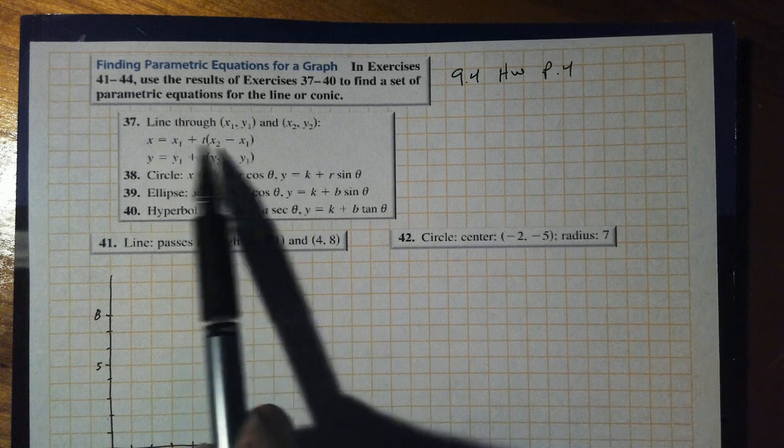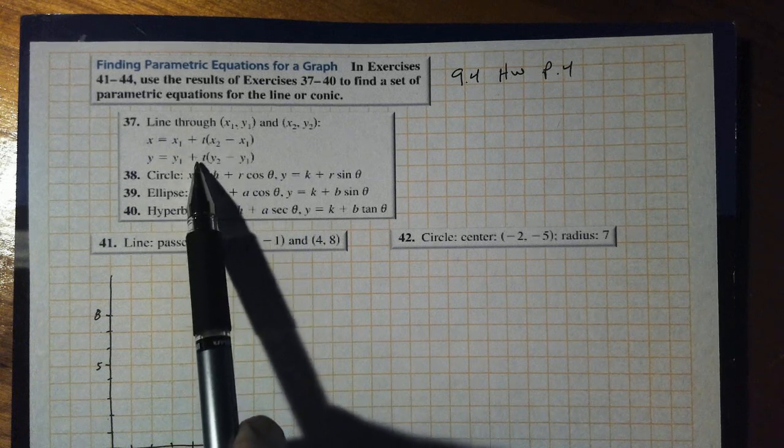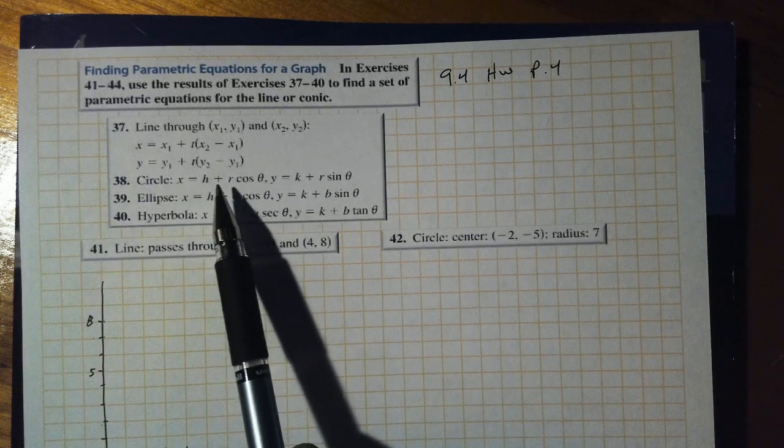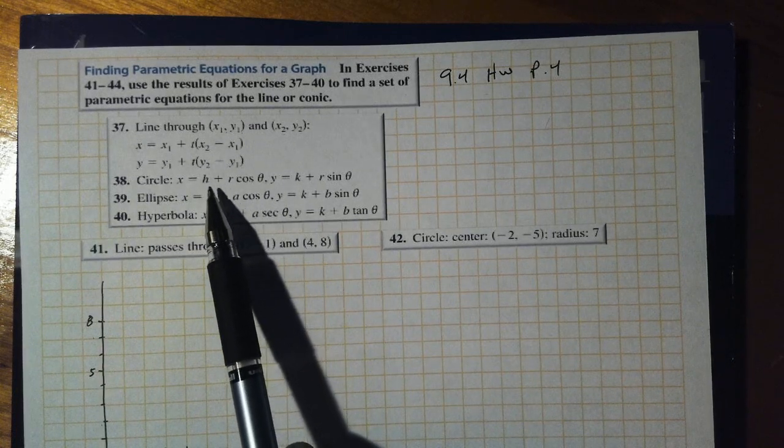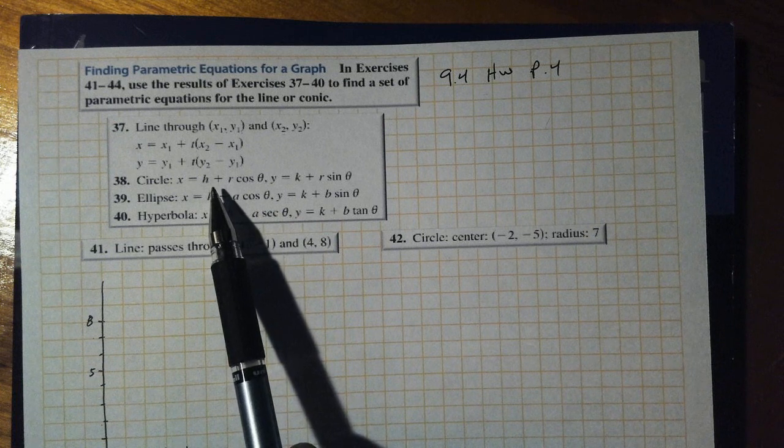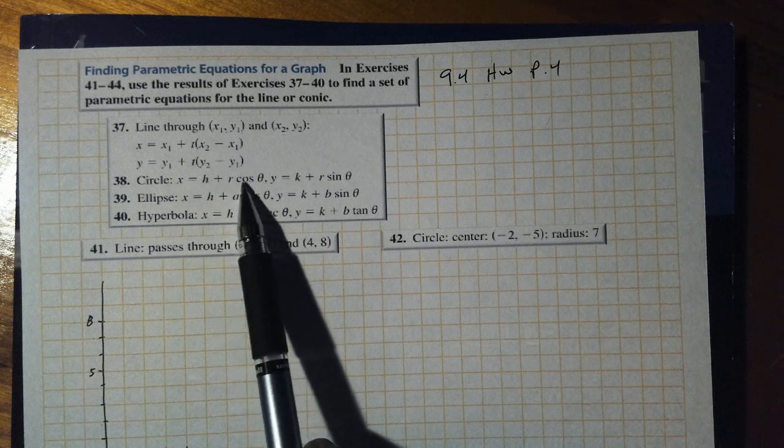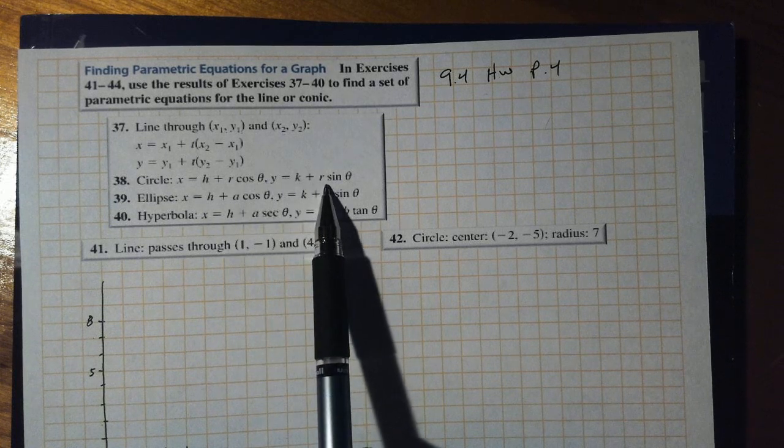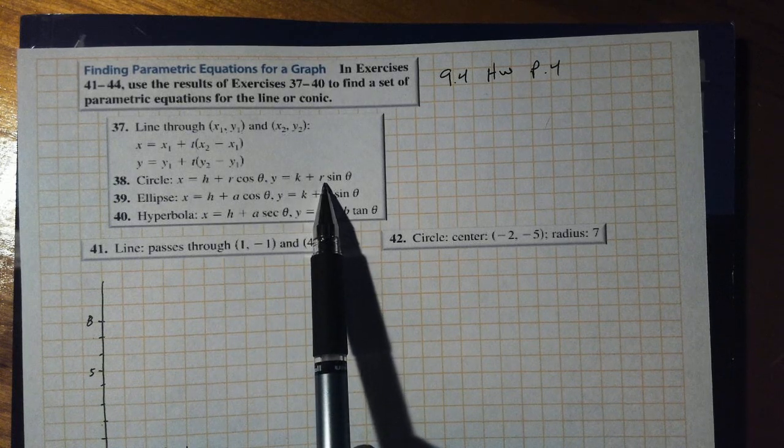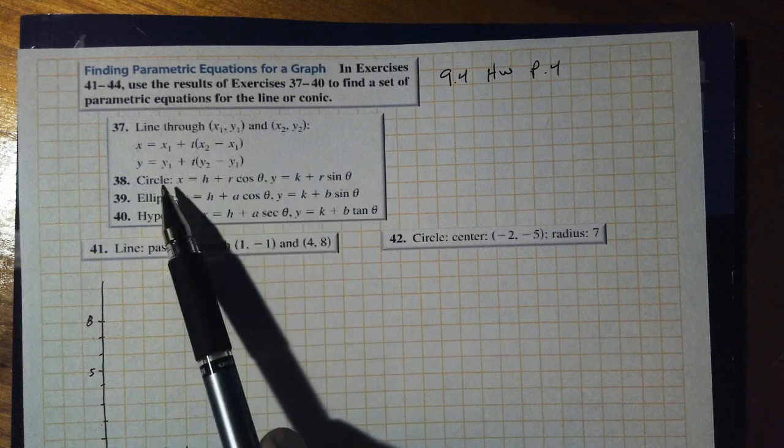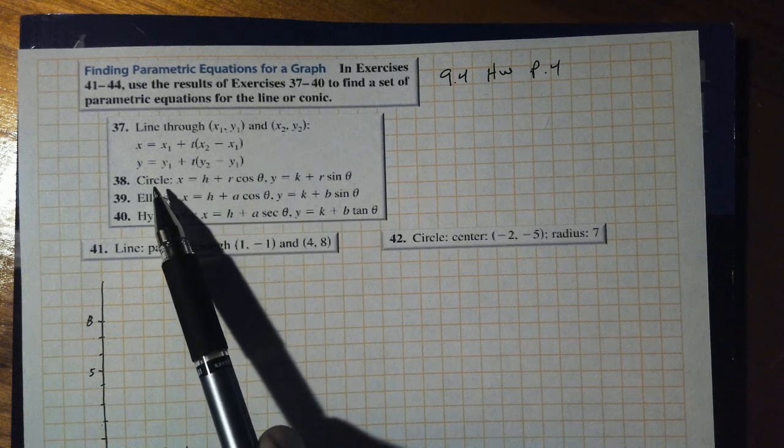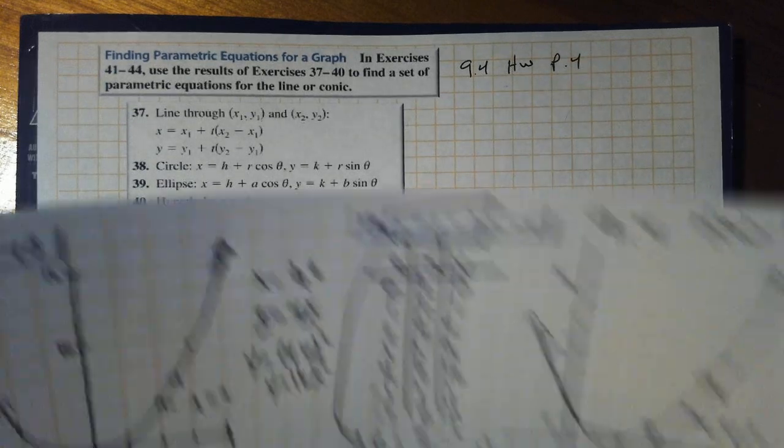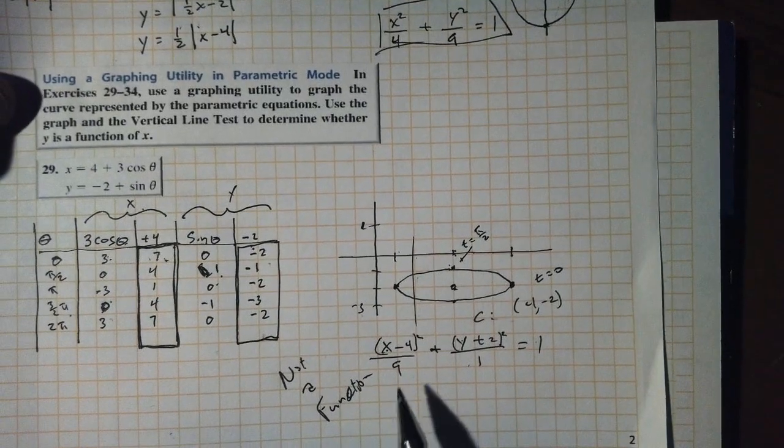Circles - we're like x squared plus y squared equals 9 for a circle. Here they have if we have the center h,k and we know what the radius is, we'd have the equation of a circle in rectangular but we also have it now in parametric form.